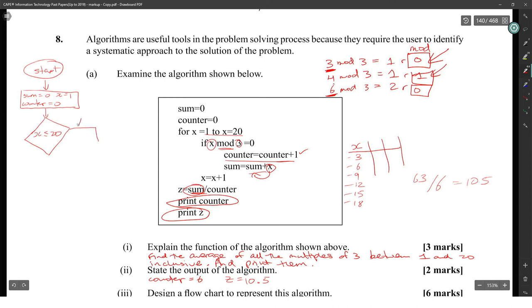Once x is less than or equal to 20, we have a yes, and that yes is going to meet us at that diamond with if x mod 3 equals zero. That's our question: x mod 3, are you equal to zero? If the answer is yes, then we're going to say counter equals counter plus 1, sum equals sum plus x. And then after the if, it's going to do x equals x plus 1.